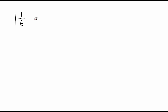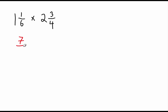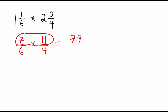Let's do one more example. Write this down: one and one sixth multiplied by two and three fourths. Go ahead and pause the video to try it. Converting to improper fractions, you should get seven over six multiplied by eleven over four — since four times two is eight, plus three is eleven.